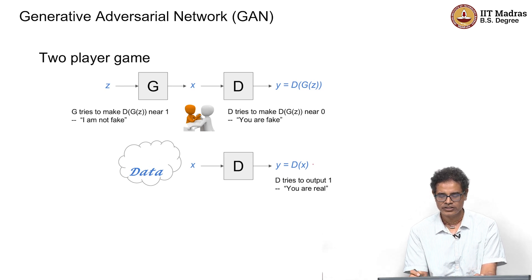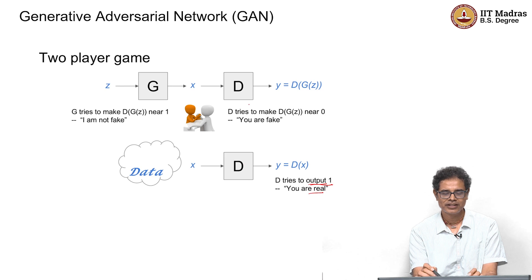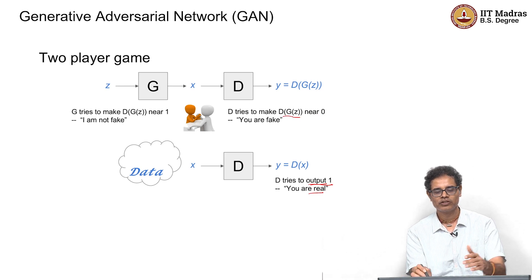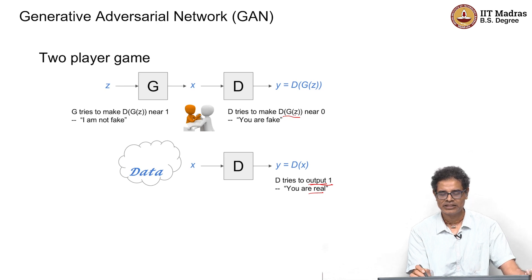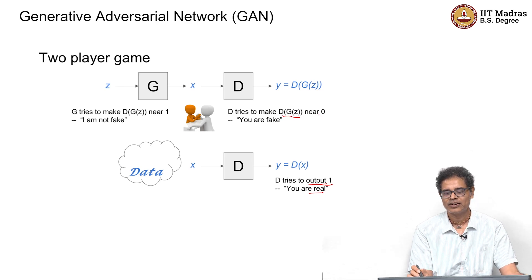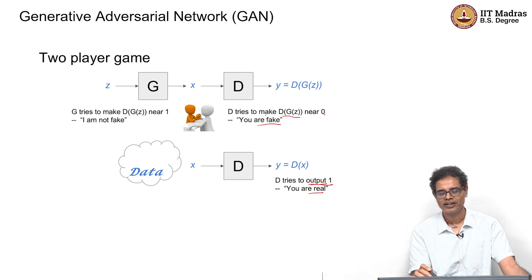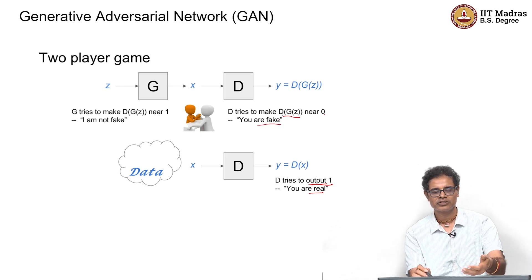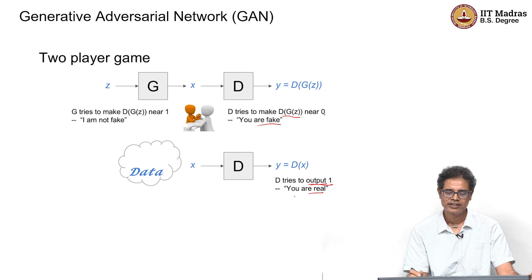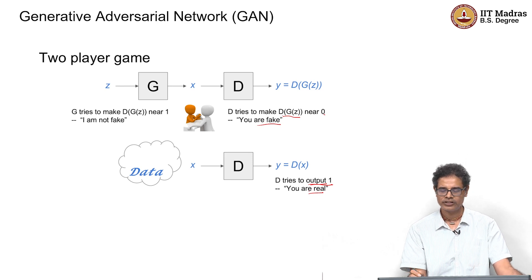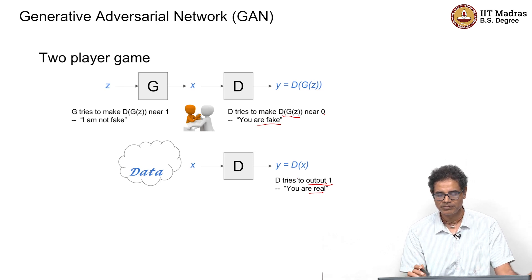The discriminator's goal is to produce an output of one for real data — if you are real, it will output one. For anything produced by a synthetic or generative method, its goal is to catch it and produce zero, declaring it fake. Anything from a generator should be declared fake; anything from the real dataset should be declared real.